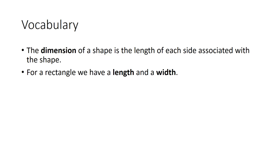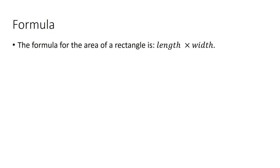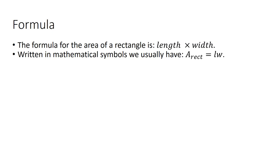The dimension of a shape is the length of each side associated with the shape — for a rectangle, a length and a width. The formula for the area of a rectangle is length times width, written mathematically as A = LW, or A with a subscript of 'rect' to describe the shape.